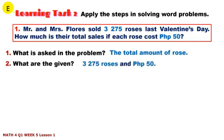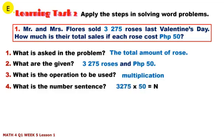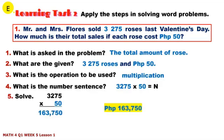What are the given? What is the operation to be used? What is the number sentence? Solution: 3,275 times 50 equals 163,750 pesos.